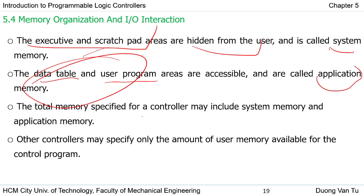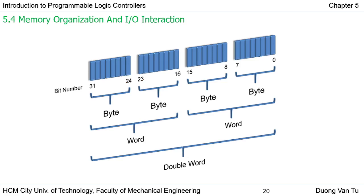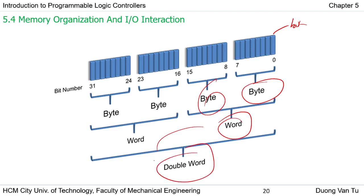The total memory specified for a PLC may include both system memory and application memory, but sometimes only the application memory is considered for control program and data use. To review: the smallest unit in memory is a bit, 8 bits form a byte, 2 bytes form a word, and 2 words form a double word, so one double word contains 32 bits.